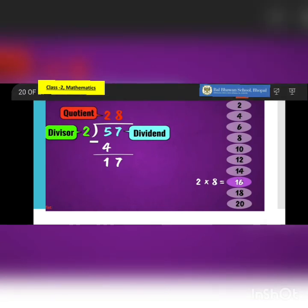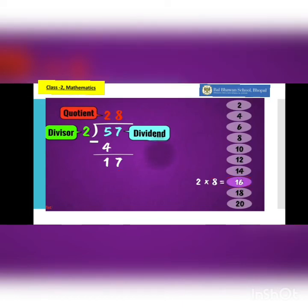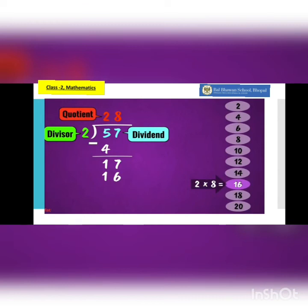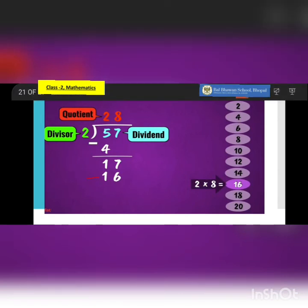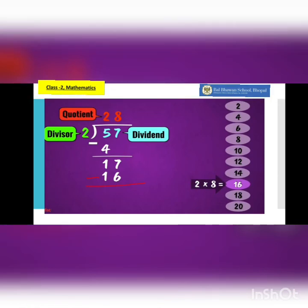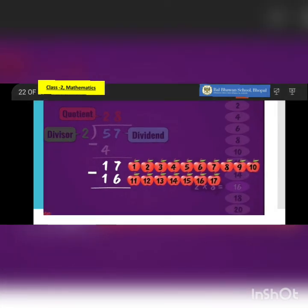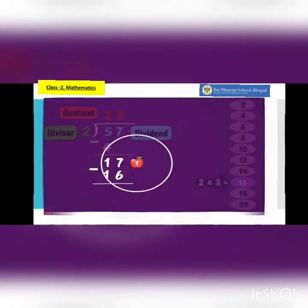Two eights are 16. This is the product - this will come down and eight will again go up at the quotient place at the ones place. Again you are going to minus these two numbers: 17 minus 16. We have got 17 apples over here and we have to minus 16. Let's count and strike it off: one, two, three... 14, 15, 16. So one apple is left.